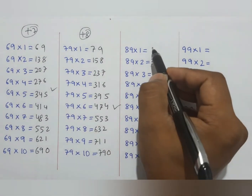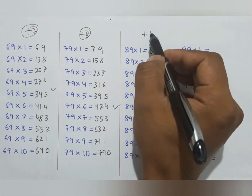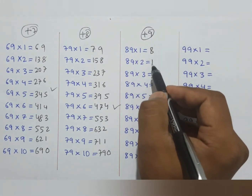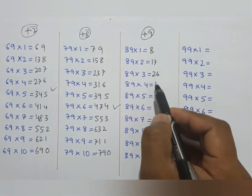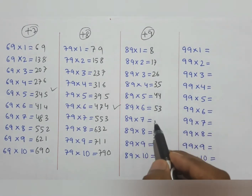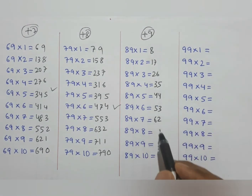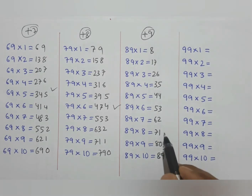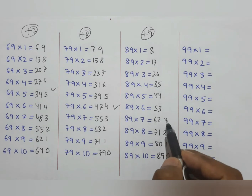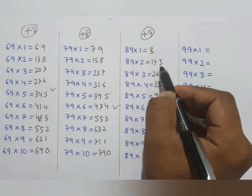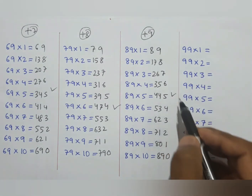This is 89. The left side starts from 8, and we add plus 9 each time: 8, 17, 26, 35, 44, 53, 62, 71, 80, 89. And the right side is 0, 1, 2, 3, 4, 5, 6, 7, 8, 9. That is the 89 times table.